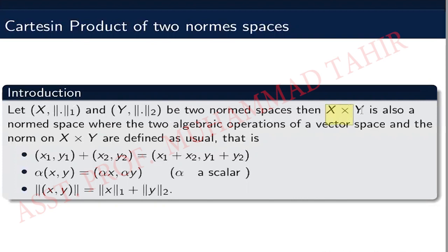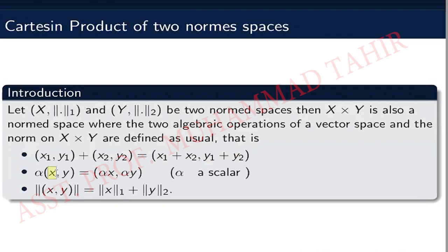X cross Y is also a normed space. In a normed space we have three things. First, vector addition: if you take two elements (x1, y1) and (x2, y2), then you add component-wise — x1 plus x2 becomes the x-component and y1 plus y2 becomes the y-component. So this is an element of X cross Y. Second, scalar multiplication: if alpha is a scalar and (x, y) is an element of X cross Y, then alpha times (x, y) equals (alpha x, alpha y), which is also an element of X cross Y.